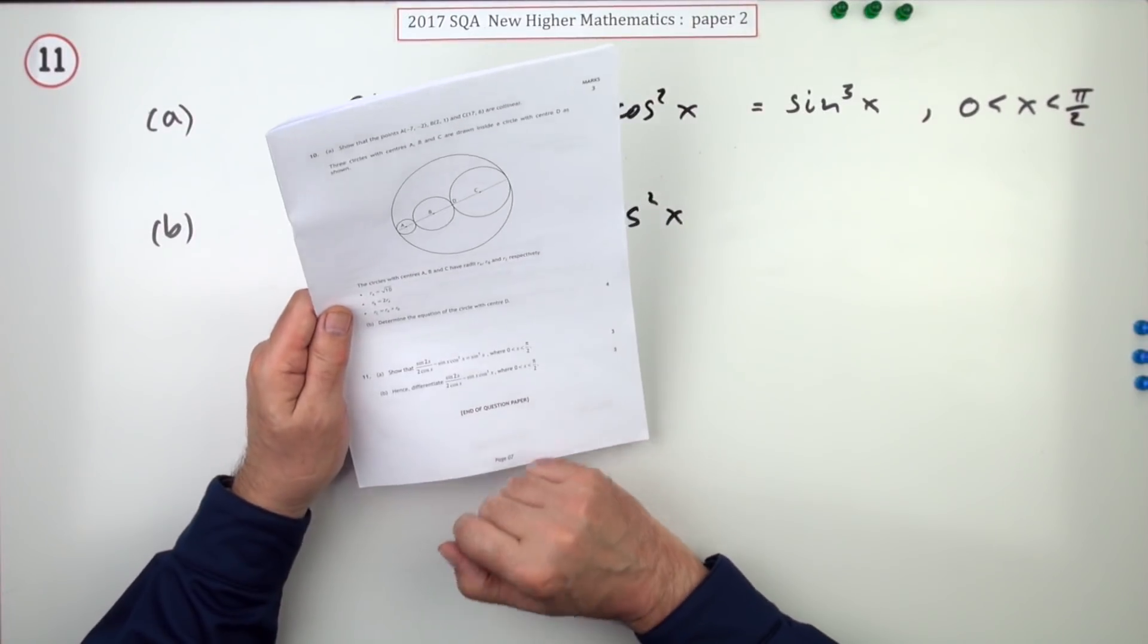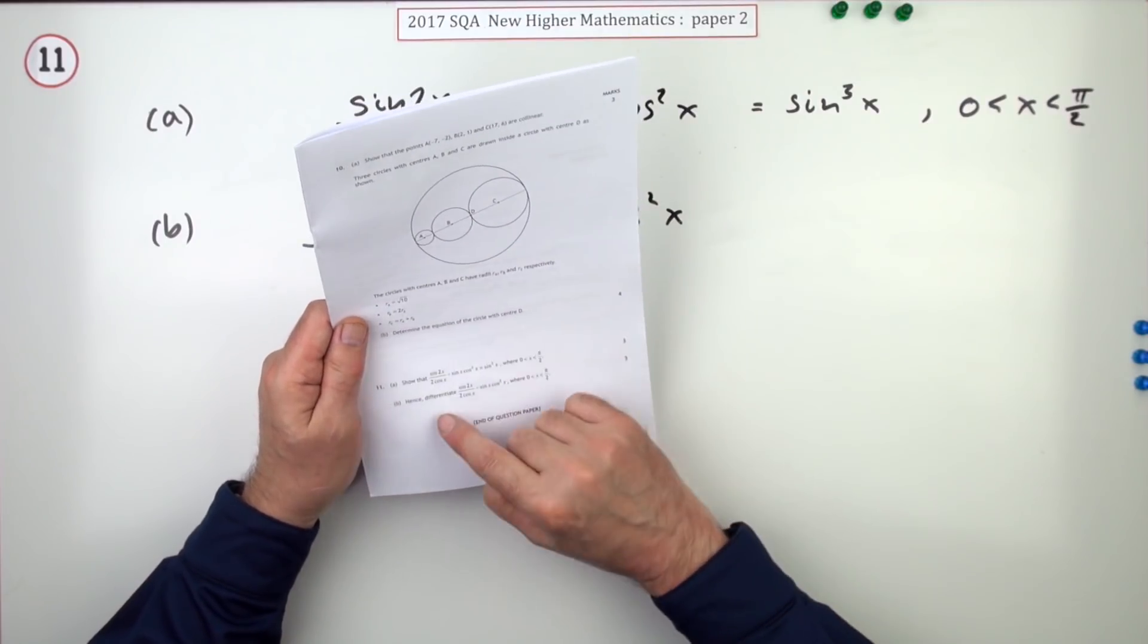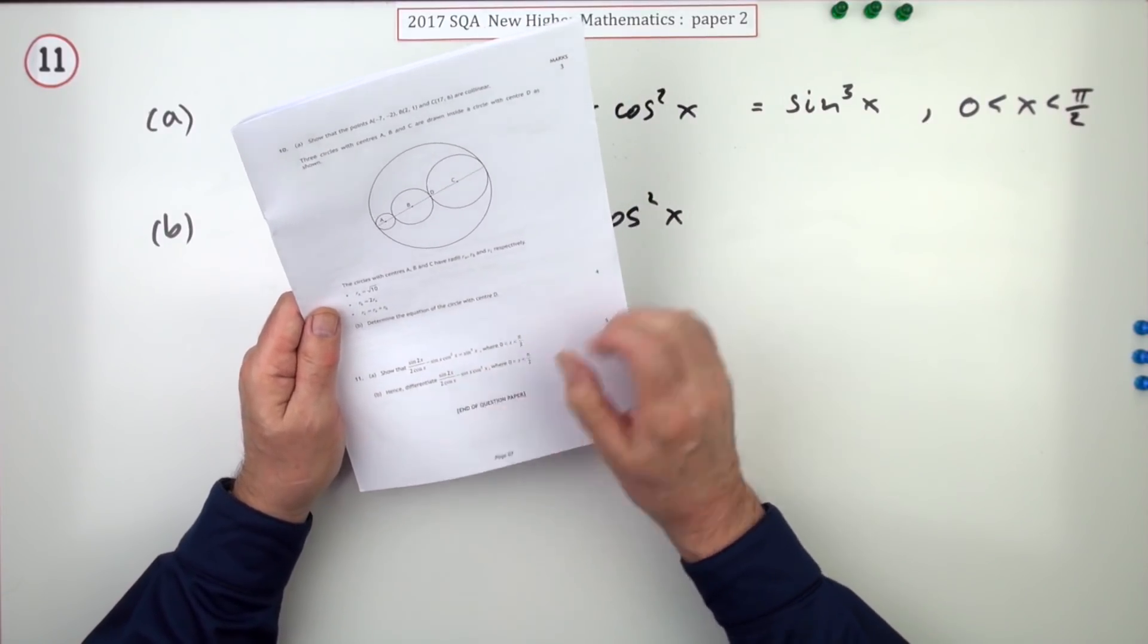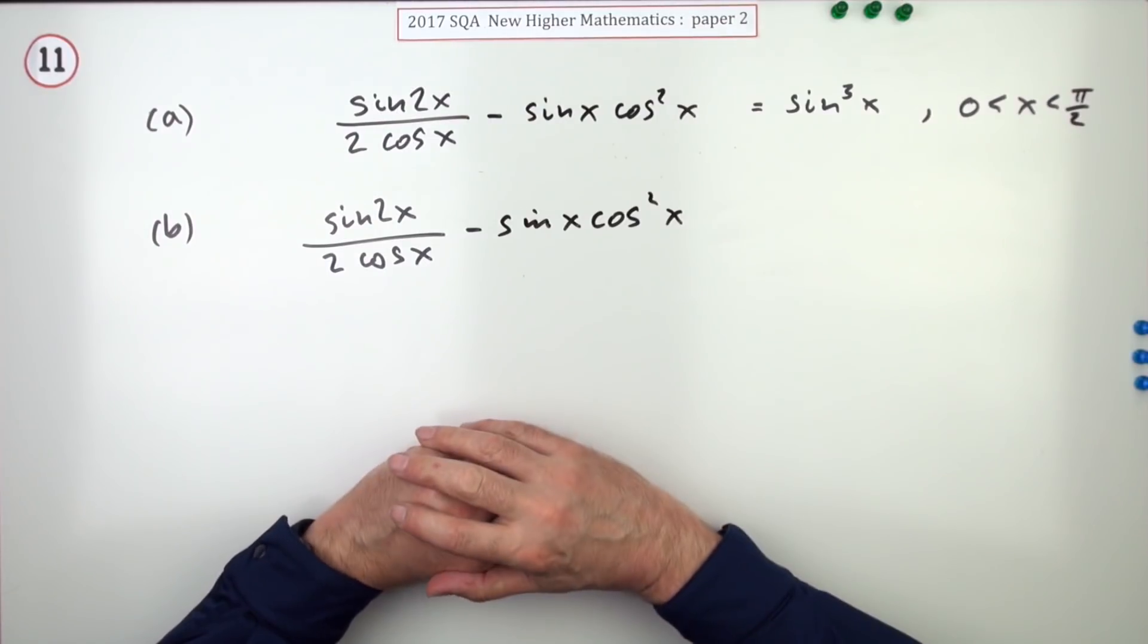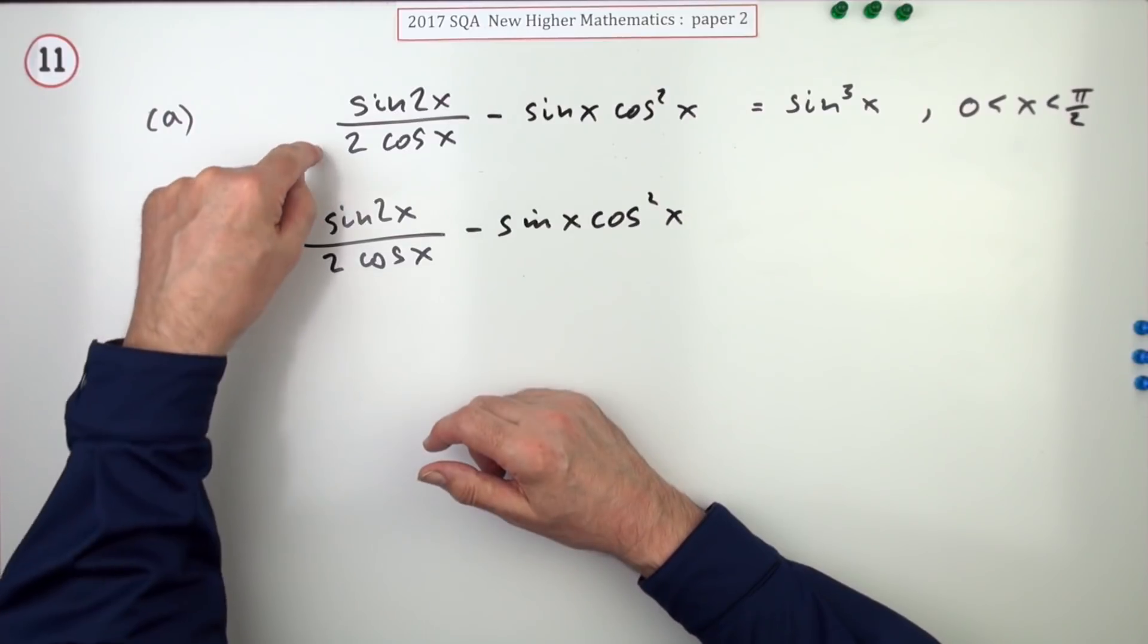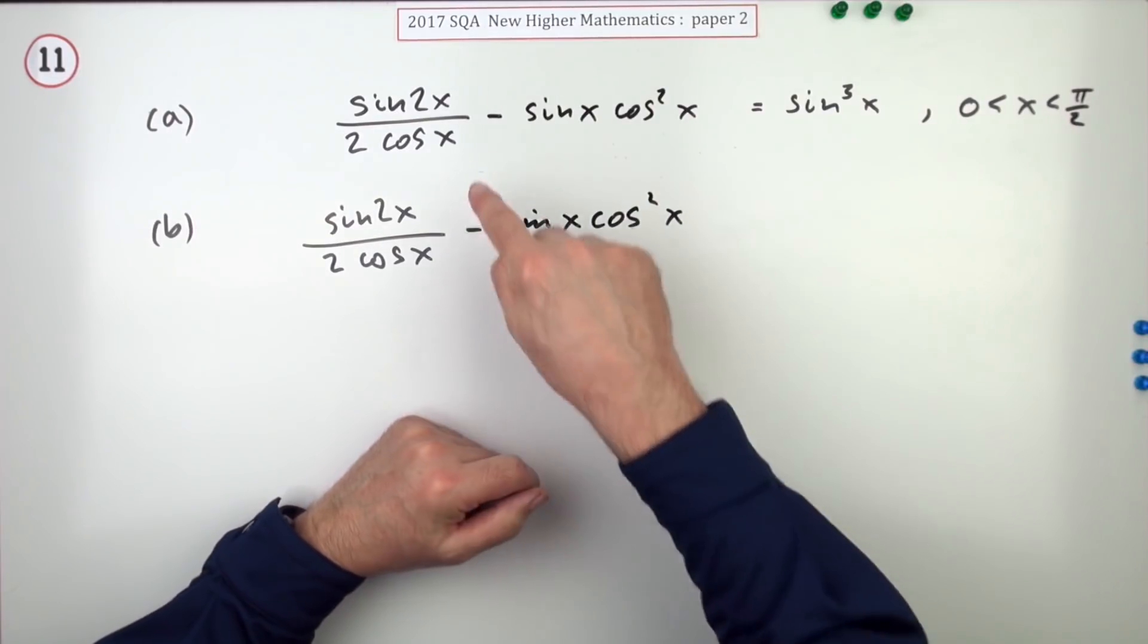Then part (b), hence, so it's related to the first part, differentiate that same expression again. You'll notice I didn't mention before that little disclaimer there about the possible values of x, because you've got this division after all.